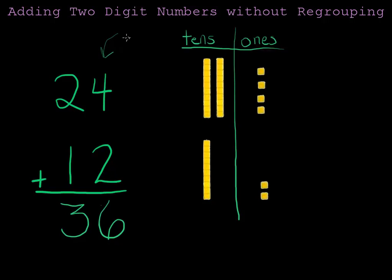It's very important that we always start by adding the ones column first, and then we can move on and add the tens column. If you go column by column, you'll get your final answer at the bottom.